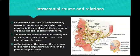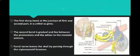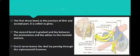The single trunk lies in the petrous temporal bone. The first sharp bend at the junction of the first and second part is called the genu, also known as the geniculate ganglion. The second bend is gradual and lies between the promontory and the aditus to the mastoid entrance. The facial nerve leaves this curve by passing through the stylomastoid foramen.